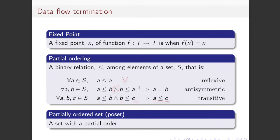You'll notice that there can be things in the set which do not compare — that's why it is a partial ordering, not a total ordering. We haven't said that all things are comparable. A poset — a partially ordered set — is any set which has a partial order defined over it.